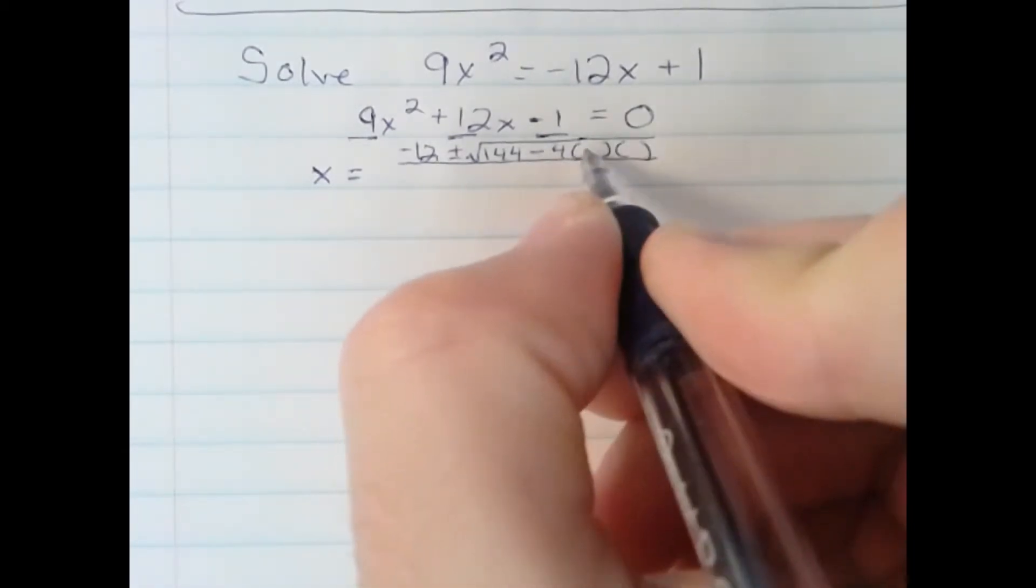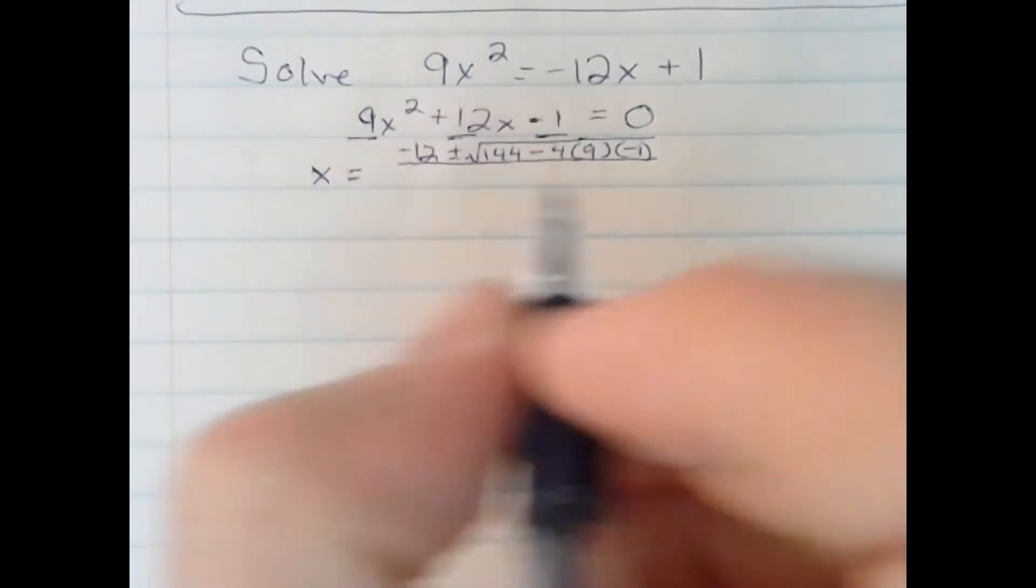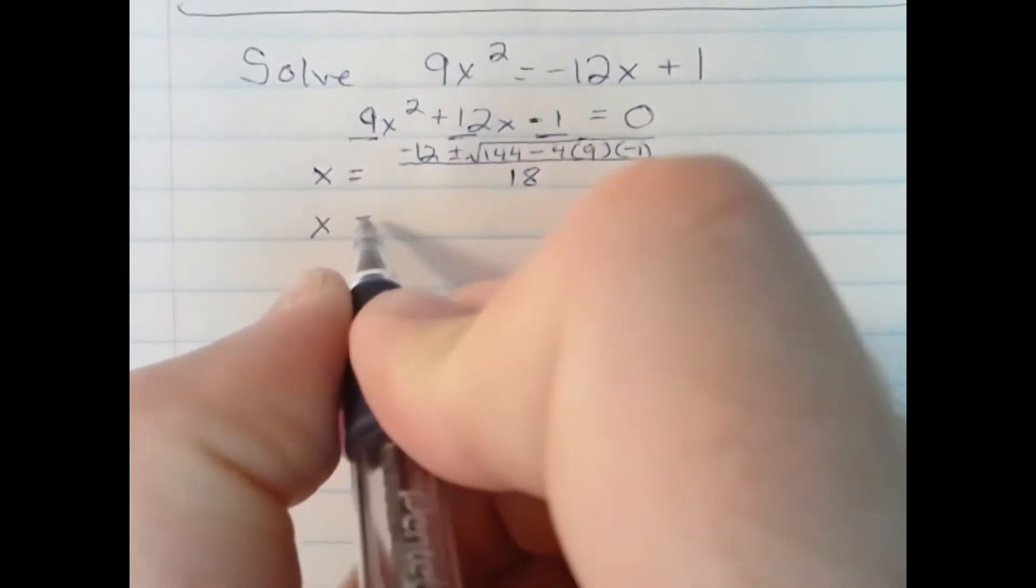The a number is 9, the c number is negative 1, all over 2a. 2 times 9 is 18. And now we'll work on simplifying what's inside the radical.